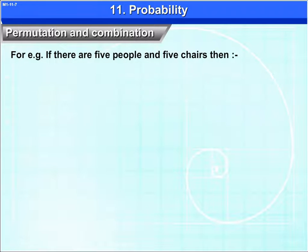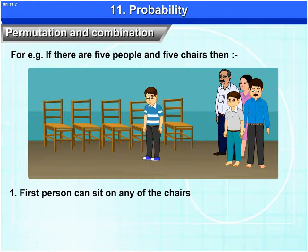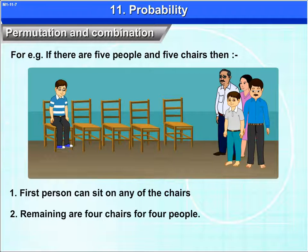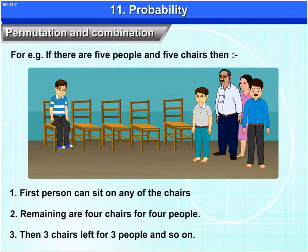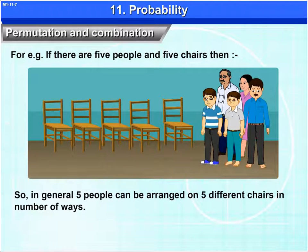For example, if there are 5 people and 5 chairs, then first person can sit on any of the chairs. Remaining are 4 chairs for 4 people. Then 3 chairs are left for 3 people and so on. So in general, 5 people can be arranged on 5 different chairs in a number of ways.